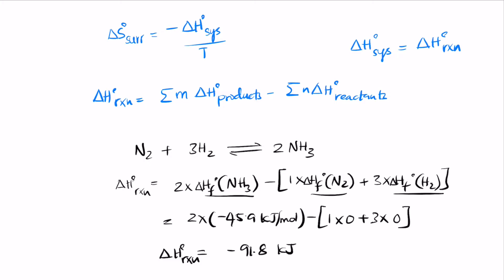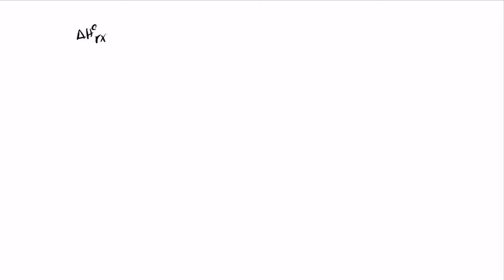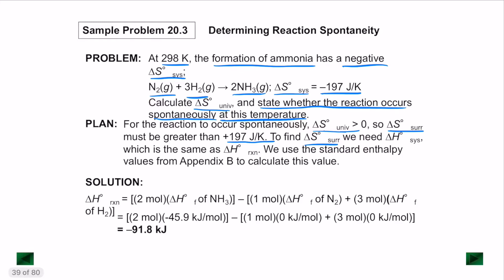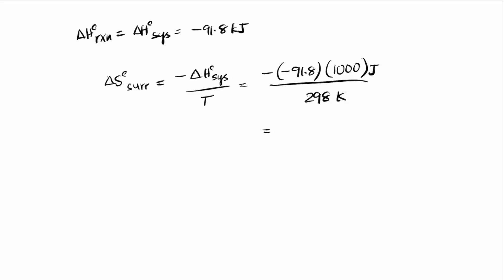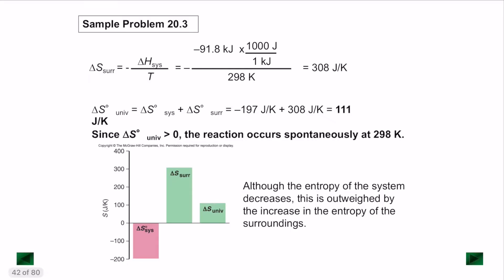Delta H of the reaction is the enthalpy of the system, which is minus 91.8 kilojoules. Now we find delta S of the surroundings, which is minus delta H of the system divided by temperature. The temperature is 298 Kelvin — remember it must always be in Kelvin as absolute temperature. So minus of minus 91.8 times 1000 Joules over 298 Kelvin gives a value of 308 Joules per Kelvin.